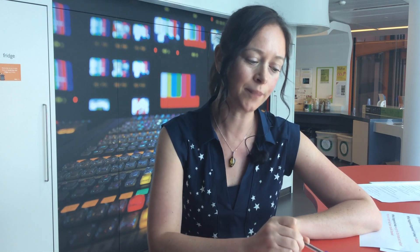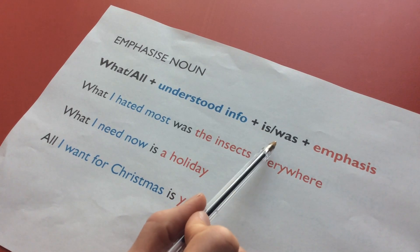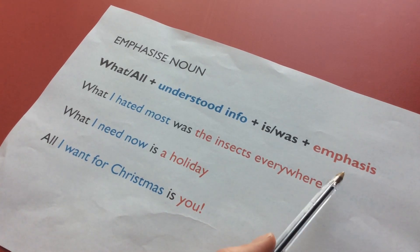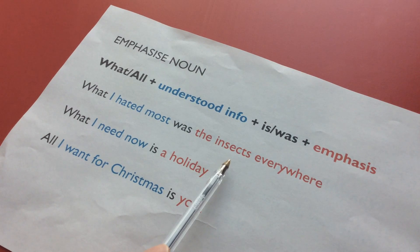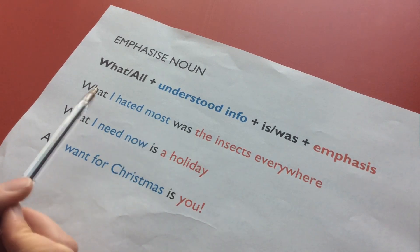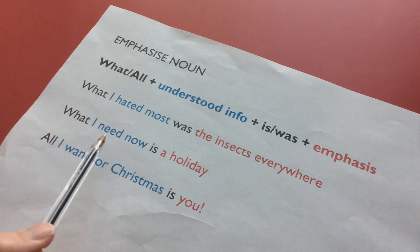When I emphasised nouns, I used this structure: 'what' plus the understood information, plus 'is' or 'was', and then the information that I wanted to emphasise. So for example, instead of 'I hated the insects', in the second version I said 'what I hated most was the insects everywhere'. Notice that even though it's plural, we normally use 'was' here because we're saying 'the thing I hated most was the insects everywhere'. Again, instead of 'I need a holiday', to emphasise, I said 'what I need now is a holiday'.